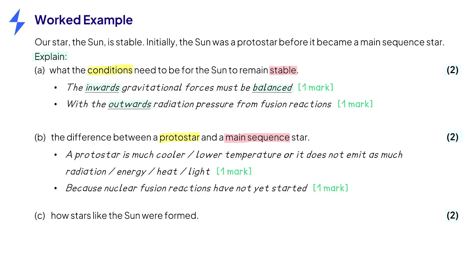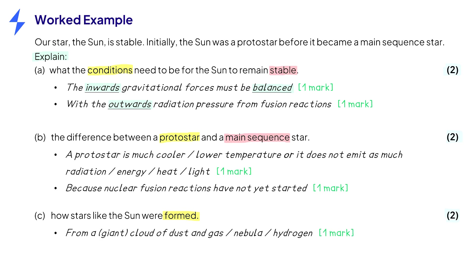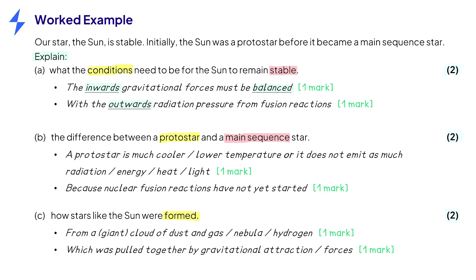Part C asks us to explain how stars like the sun were formed. For two marks, we just need to reference the initial cloud of dust and gas, which was pulled together by gravitational attraction, or forces.